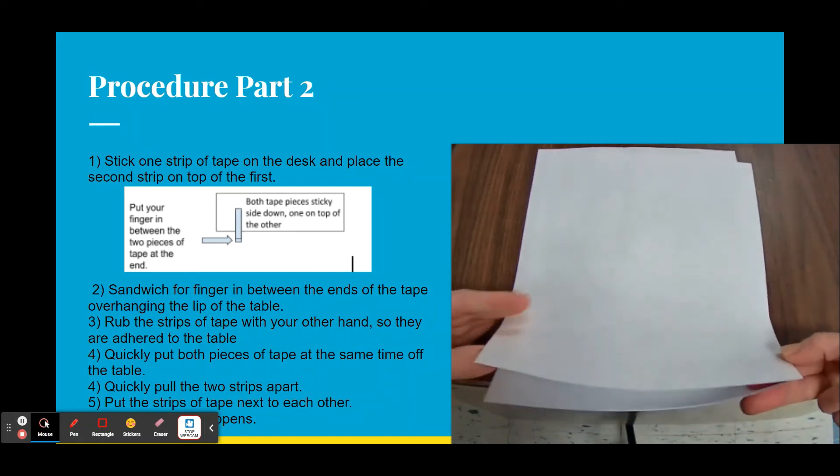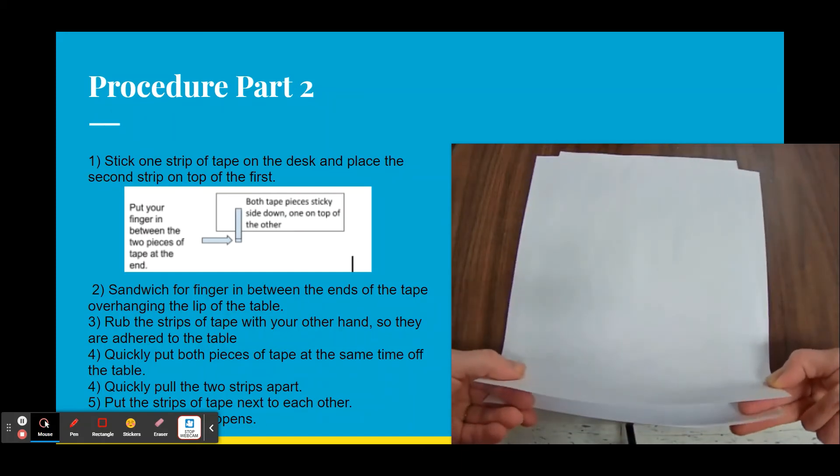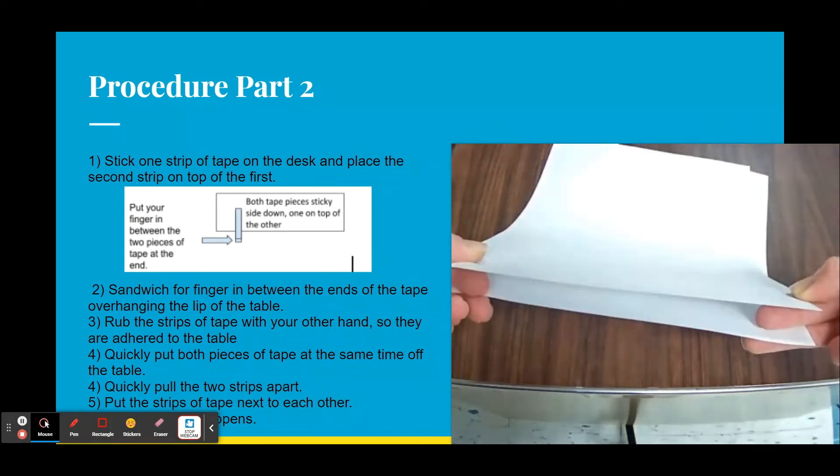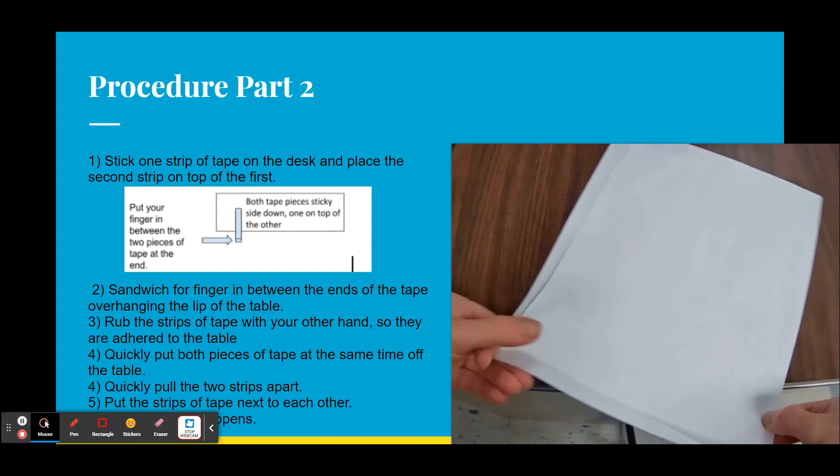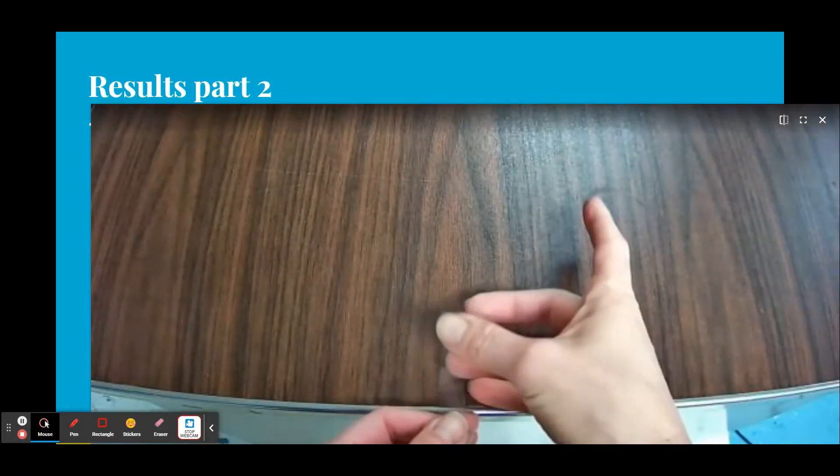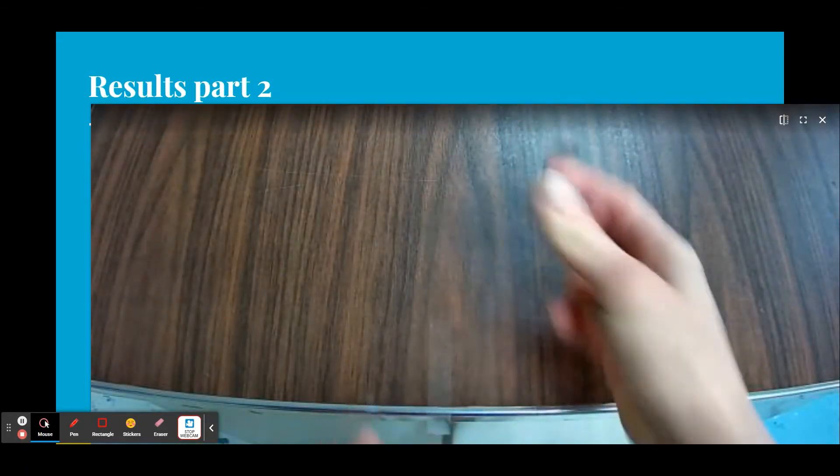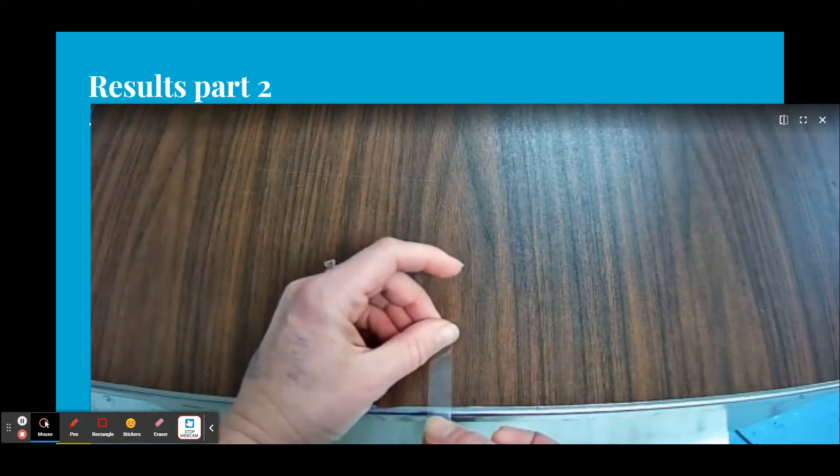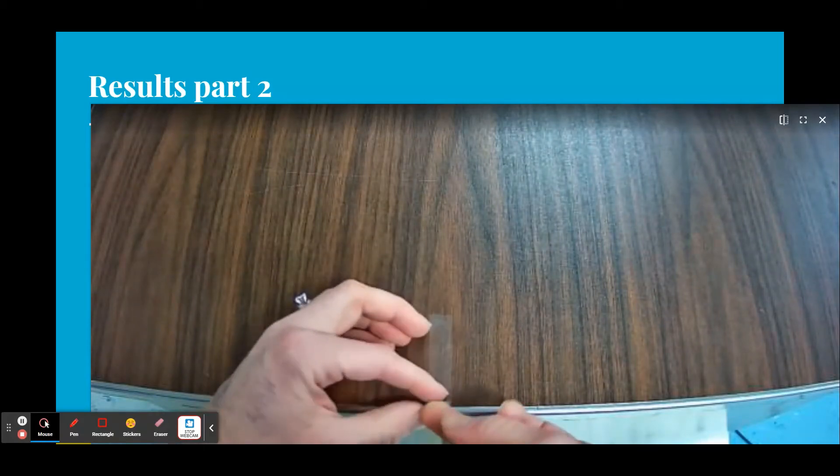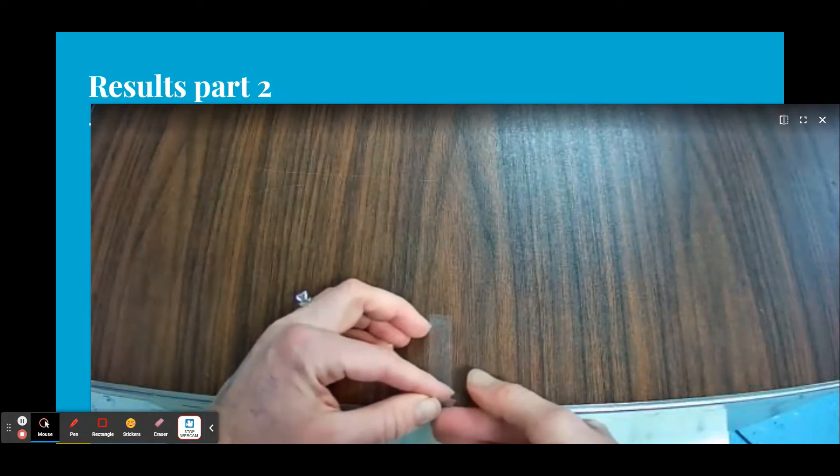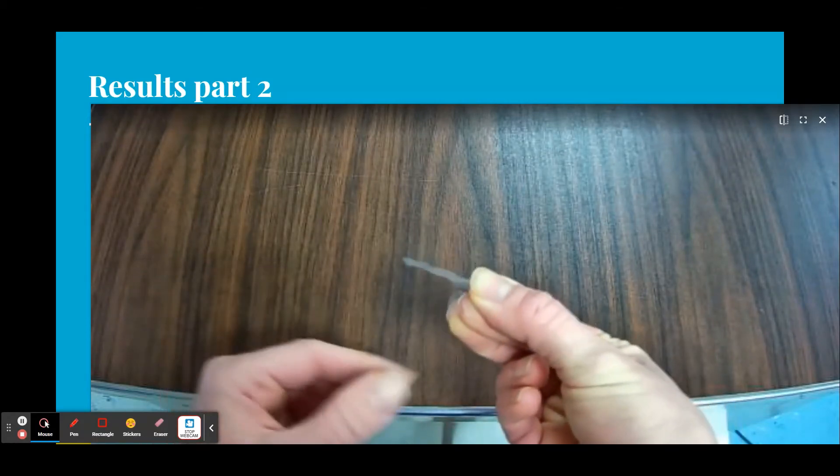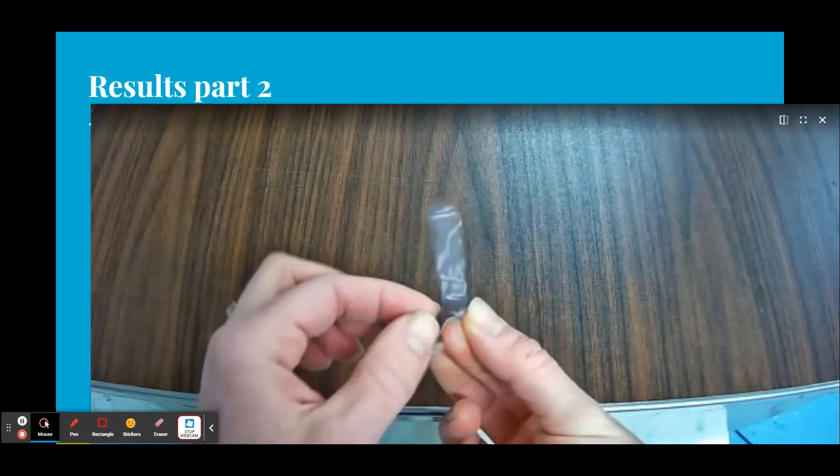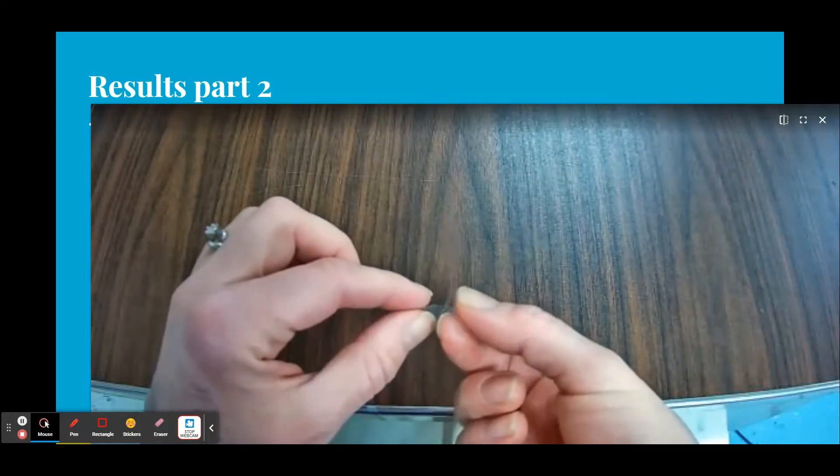Then I put it like this, and I'm going to pull both up off the table and then rip them apart. Here are my two pieces of tape, put one down, put the other on top, rip them both off the table, and then I'm going to rip them apart from each other.